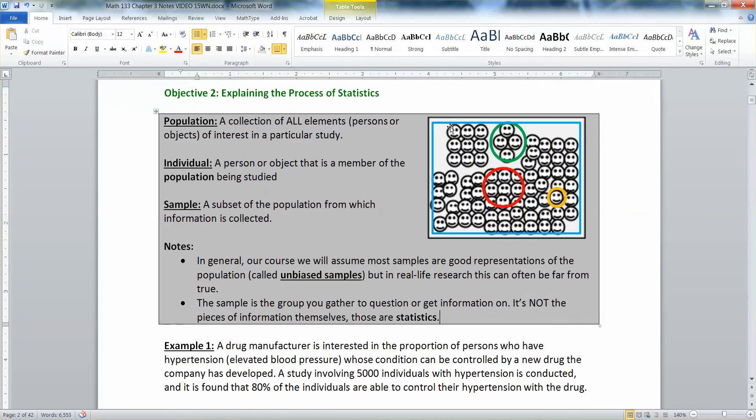So first thing they want us to do is state the population. Now I drew this up here and I forgot to mention this, but the population's in that blue box. It's kind of everybody. I'll kind of highlight this for you. So it's all the people. They're the population. All of them, all little smiley faces. Now an individual is just any single person from that population. So in this case, it's the person that's in orange. They're the individual.